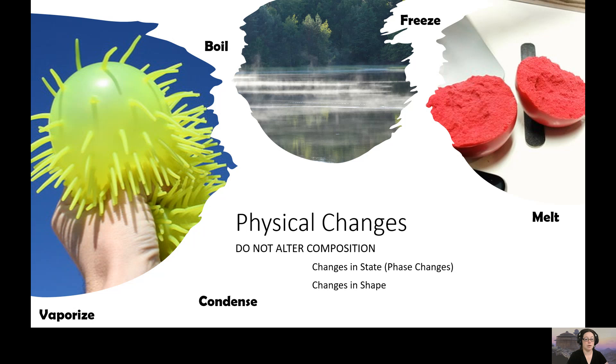So physical changes are things like phase changes and changes in shape. If you take a look right here, that is a shape change. You're squishing it. Over here is a shape change. Someone's cut that kinetic sand. And then here in the middle, there is a state change. The water is turning into a gas from a liquid. Your physical changes do not alter the composition of anything. They just are those state and shape changes.